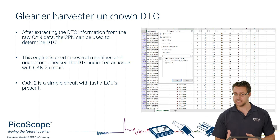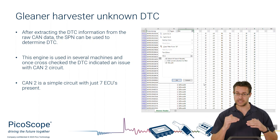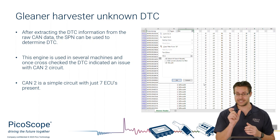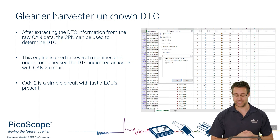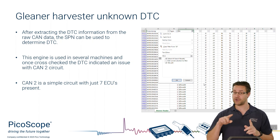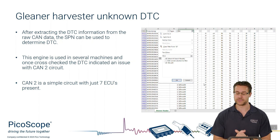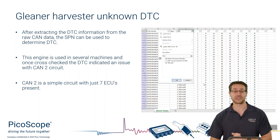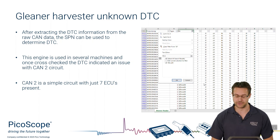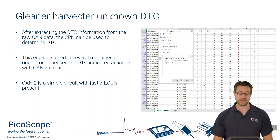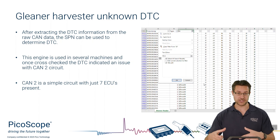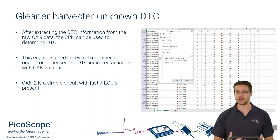If you have the J1939 DA document, there is information on how to extract the DTC from the data in that message. You can extract what we call the suspect parameter number, or SPN, which relates to the DTC. Also in there is something called the failure mode indicator, or FMI, but you have to look at this in binary to extract that data - a scan tool would make life easier. The SPN that came out was cross-checked against another manufacturer using the same engine, and it came up with the CAN2 circuit.